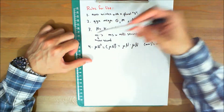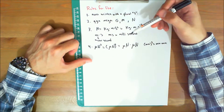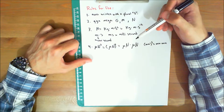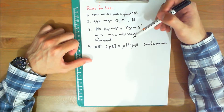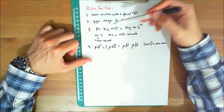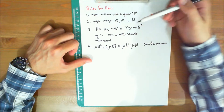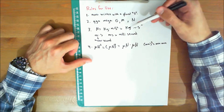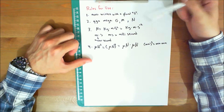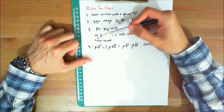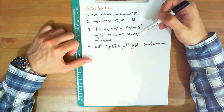Number three: quantities defined by several units which are multiples of one another are separated by a dot to avoid confusion with prefix notation. For example, newton equals kilogram times meter per second squared, written as kg·m·s⁻². Note that m·s means meter per second, whereas ms means millisecond.